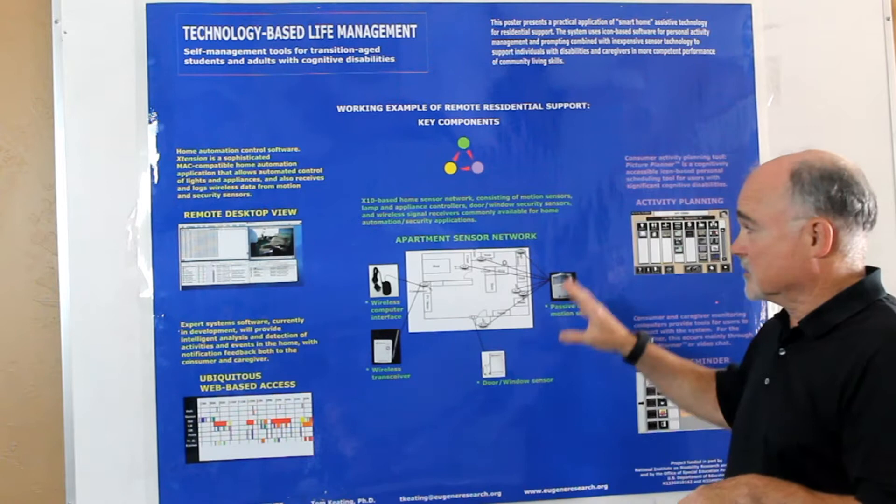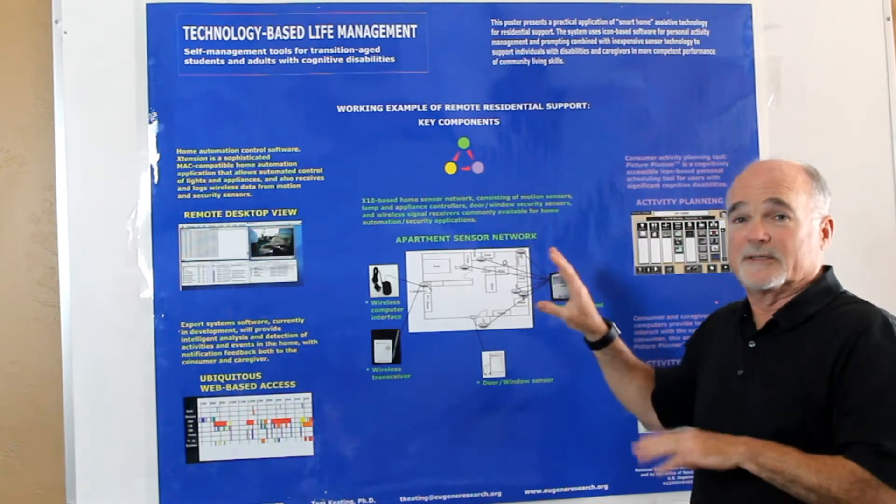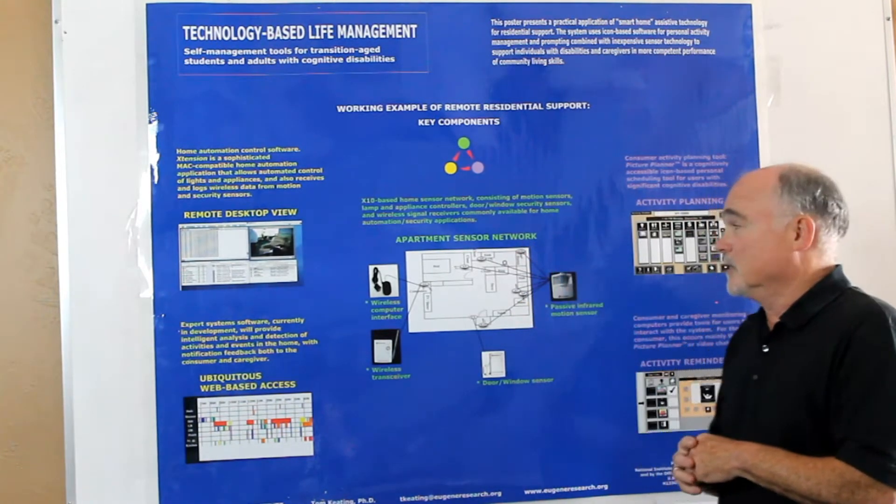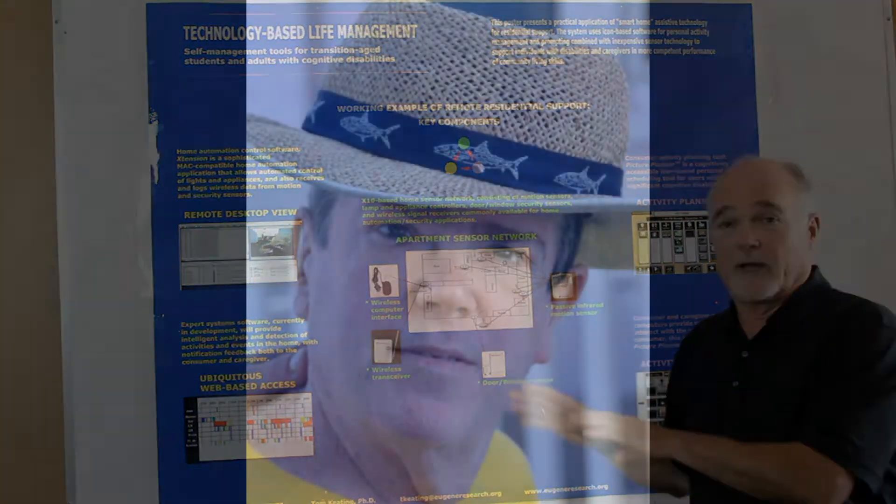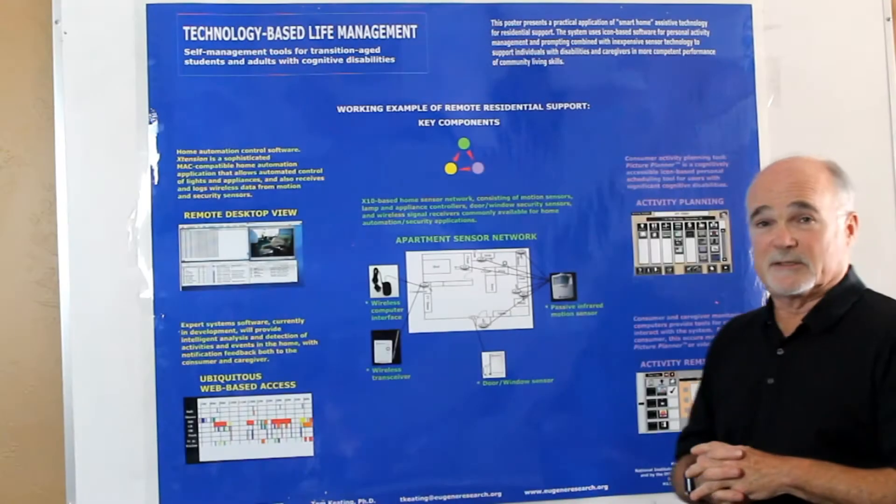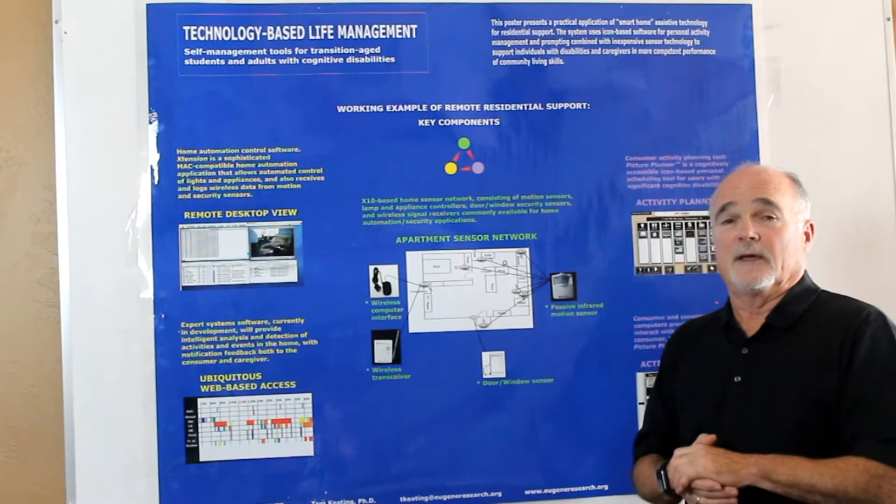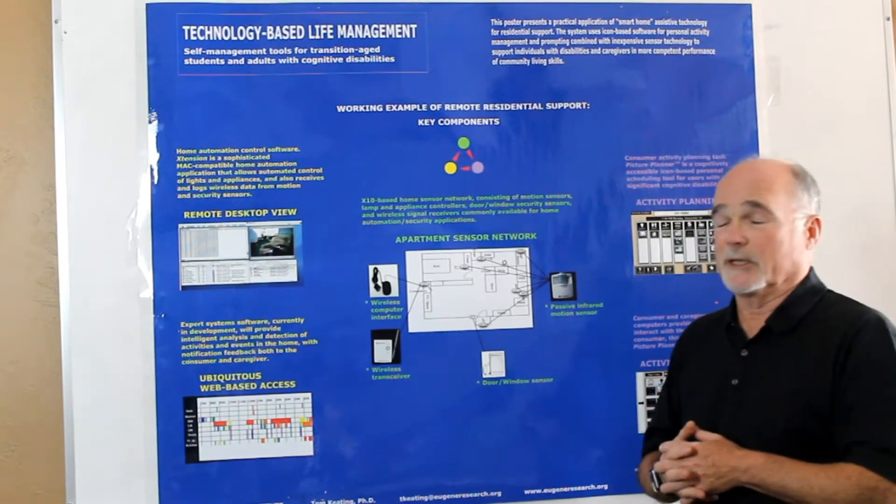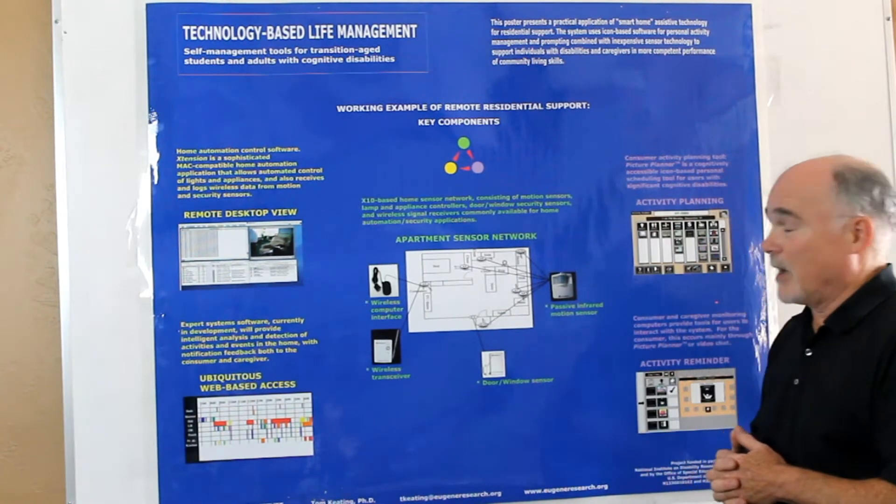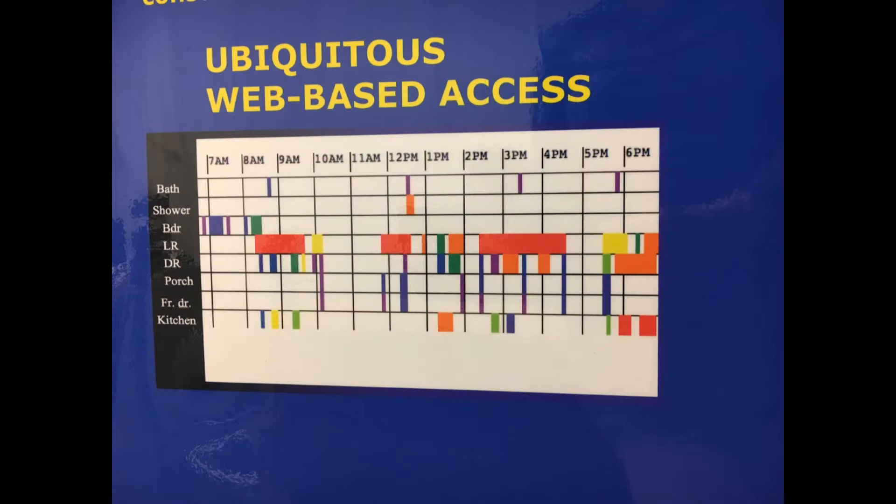In this case, the specific example that I'm showing you is a censored apartment that I created for my brother James who experienced autism. It was pretty simple. It was cobbled together from home automation gear at the time that was really common and popular, at least among home automation enthusiasts.